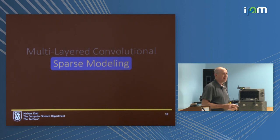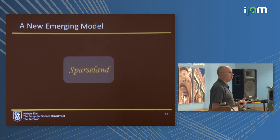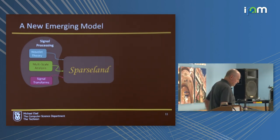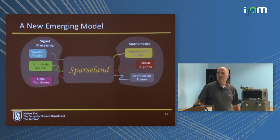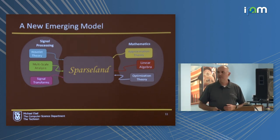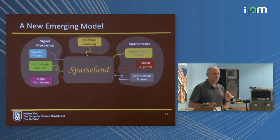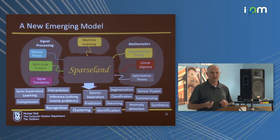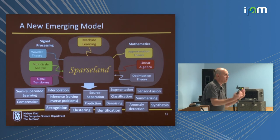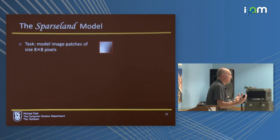Now let's talk about sparse modeling. Sparse land is not coming out of the blue. It relies on a lot of knowledge accumulated in signal processing, mostly in the context of wavelets and other transforms, on chapters in mathematics such as approximation theory, tools from linear algebra, optimization, and concepts from machine learning. This model has been used very successfully in long lists of applications, showing oftentimes state-of-the-art results. Let's show how this model operates on image patches and how it identifies structure in those patches.